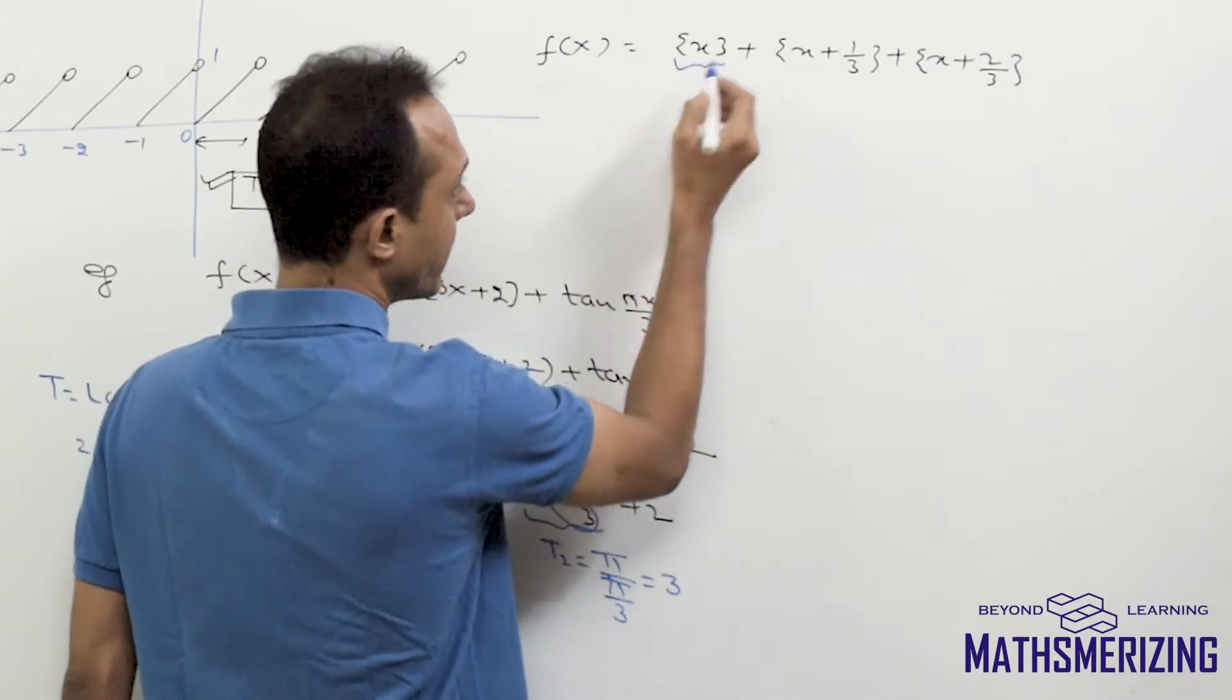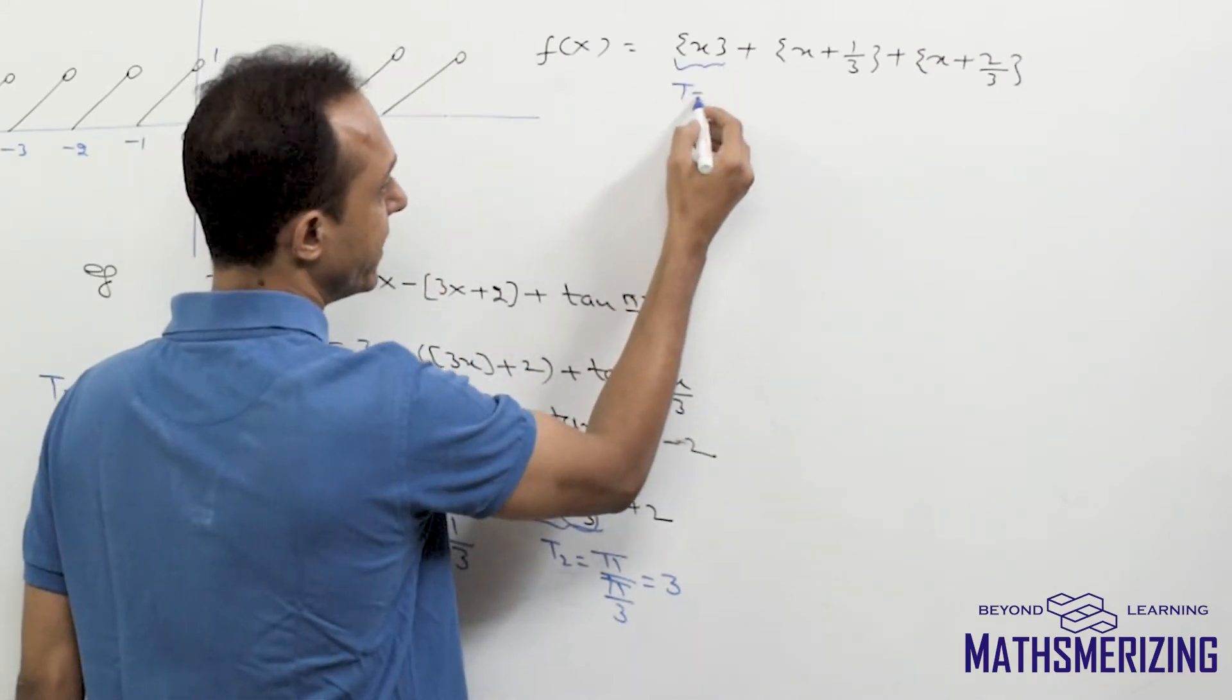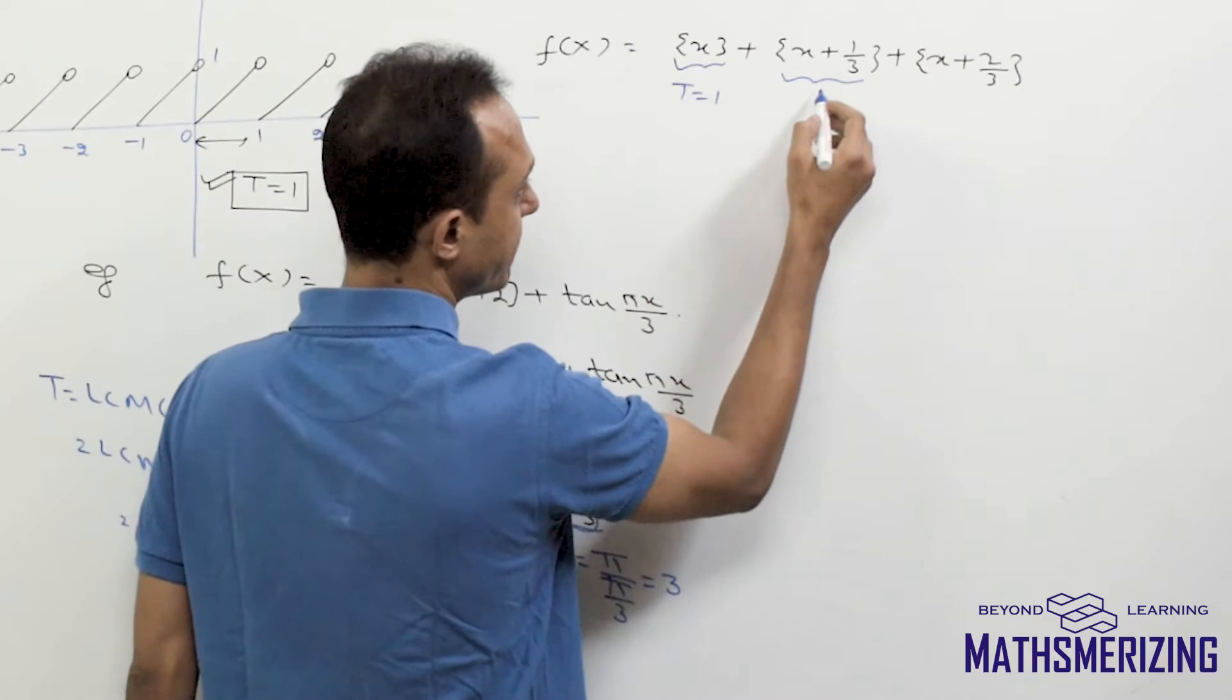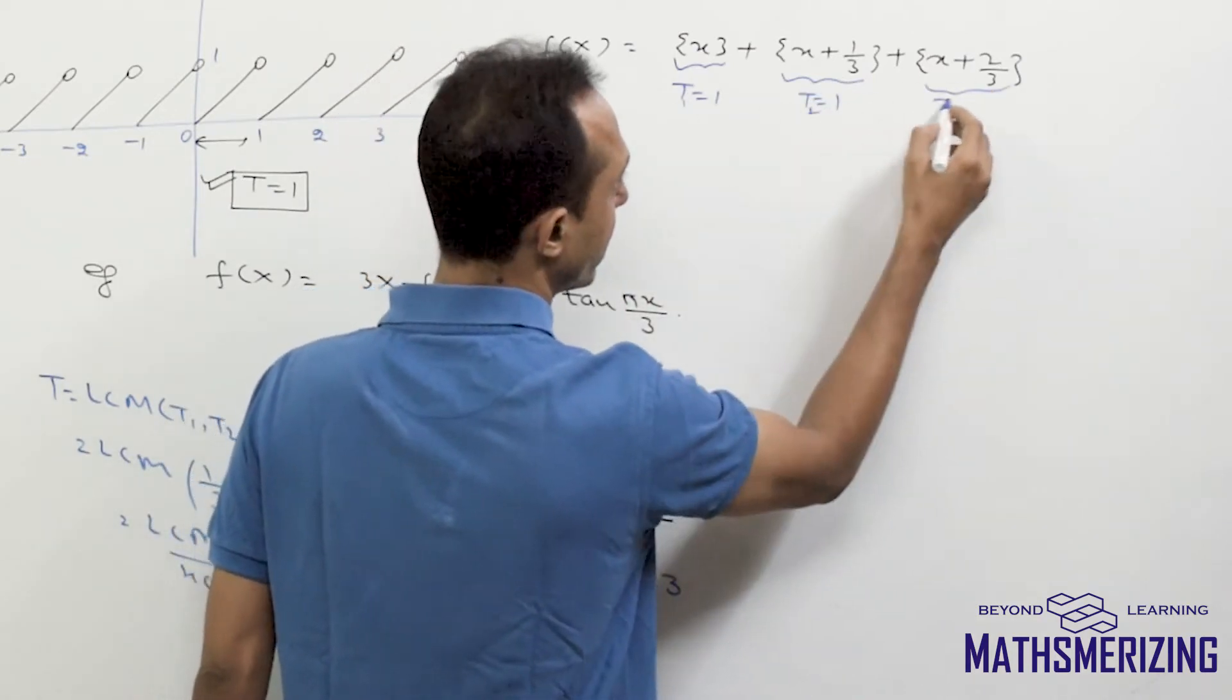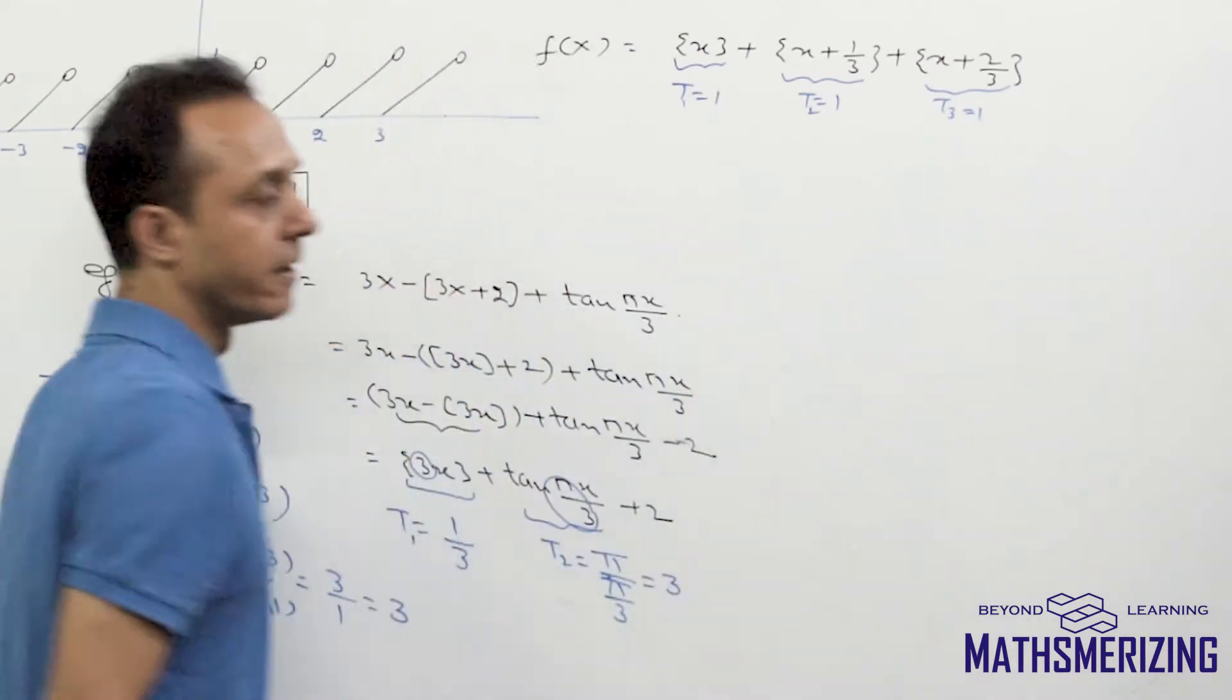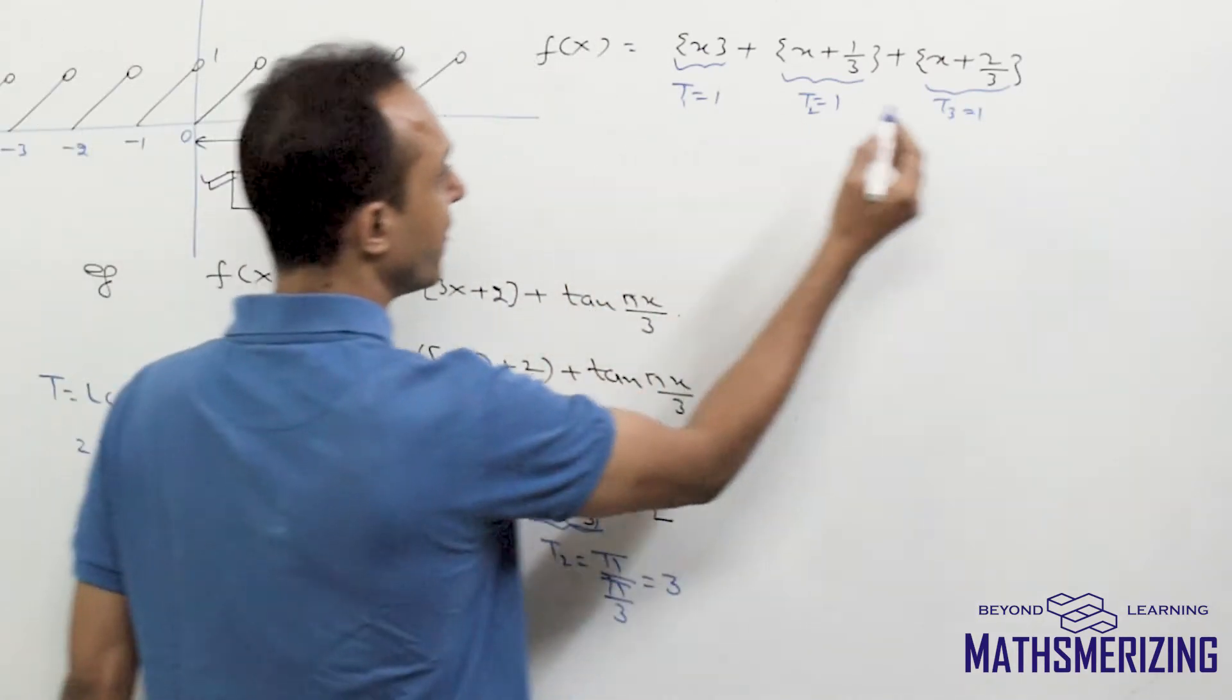Now what do I know? Fraction part of x, its period is 1. For x plus 1 by 3, also its fundamental period will be 1, and for the third one also its fundamental period will be 1. So if I take the LCM of these three,